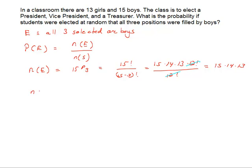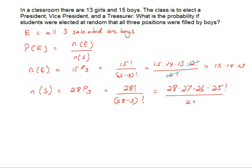The number of ways that we can select three students in those positions, again, is a permutation, but this time, we can select any three from the total class. And so, that's going to be twenty-eight, choosing the three. And so, we have twenty-eight factorial over twenty-eight minus three factorial, as the number of ways that can occur. Twenty-eight times twenty-seven times twenty-six times twenty-five factorial over twenty-five factorial. The twenty-five factorials cancel each other out, and that leaves the result as twenty-eight times twenty-seven times twenty-six.